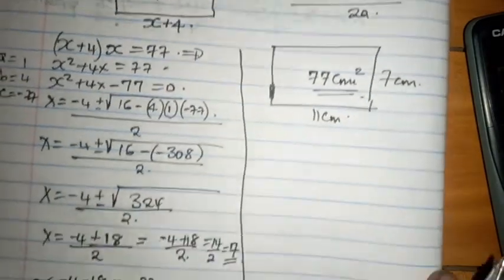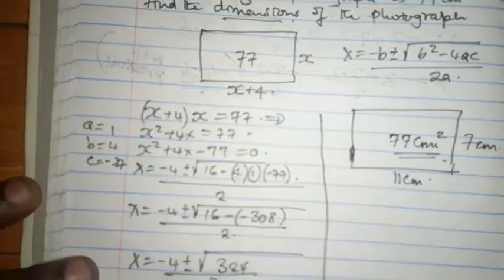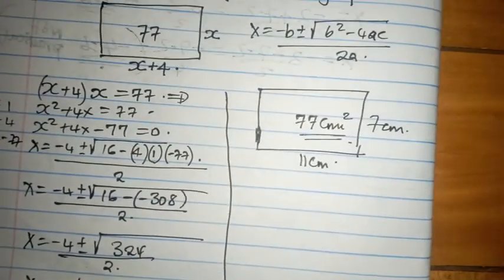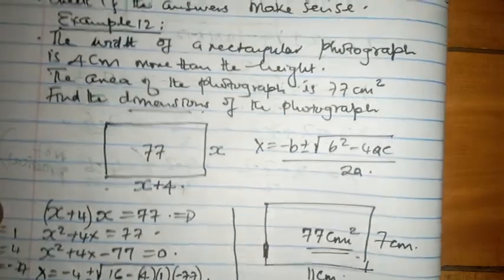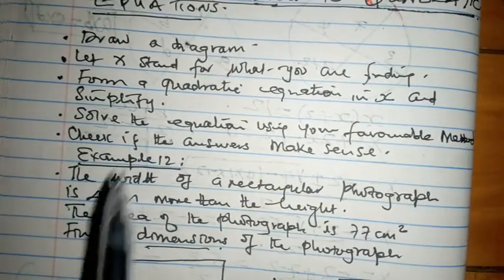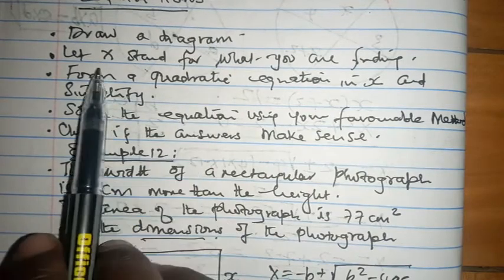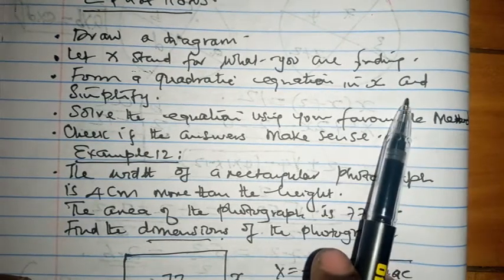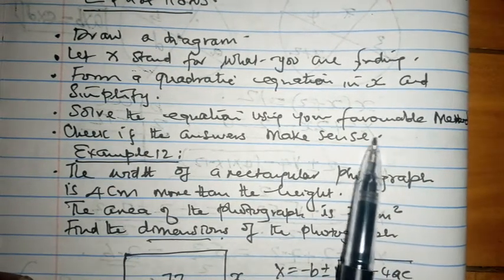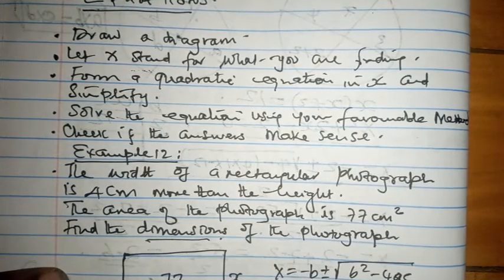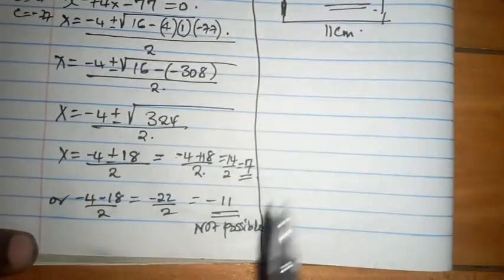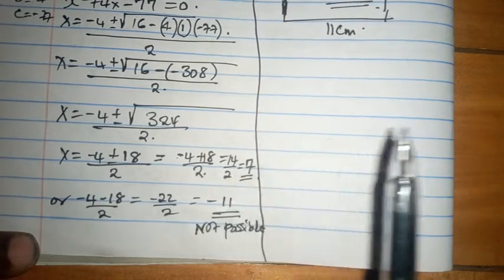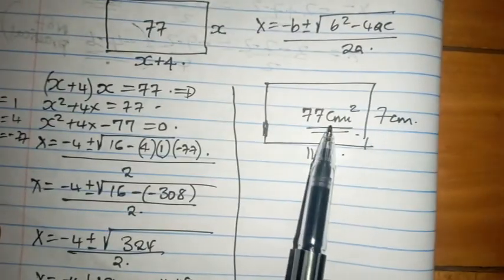And that is how we have solved this. We have formed an equation and solved it using the quadratic method. Once again we have talked about: draw a diagram where relevant, let x stand for what you are finding, form a quadratic equation in x and simplify it, solve the equation using your favorable method, and check if the answers make sense. In our case negative 11 was not making sense so the only practical answer is x equals 7 centimeters.